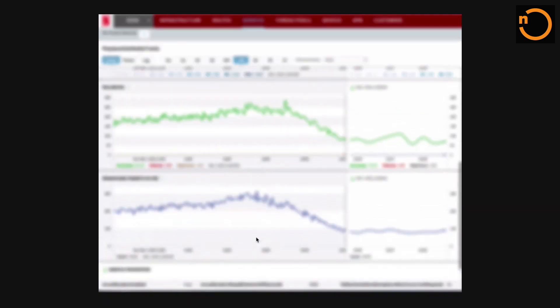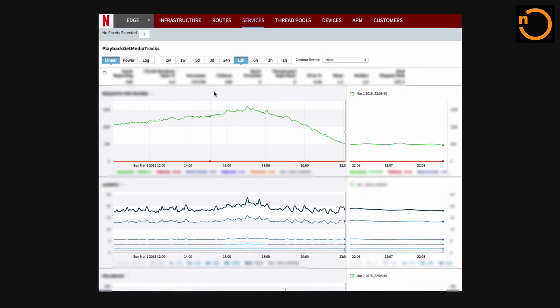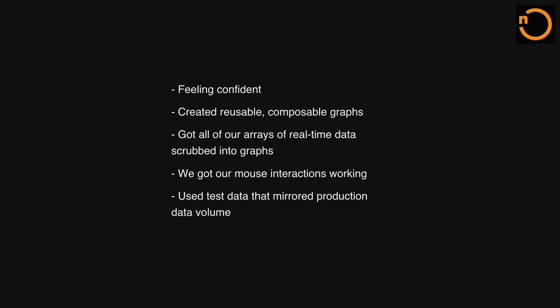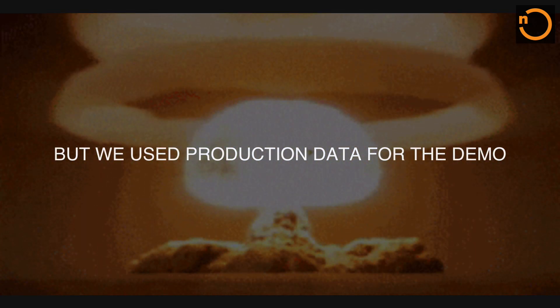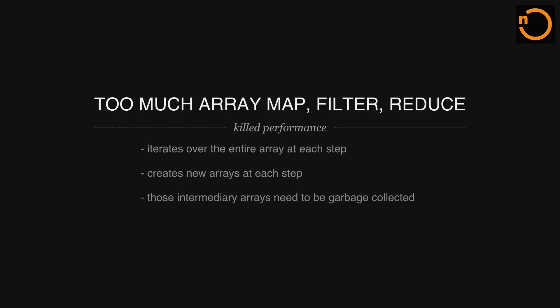They built it using functional programming because they wanted to parallelize in the future, and they worked toward the first big demo. They were feeling really confident — reusable components for graphics, getting information in real-time from web sockets, using very big test data, and all mouse interactions working. So they were really, really happy, like — this is going to work. On the demo day, they decided to connect to the production database. And, well, this happened. That's the team escaping after it broke.